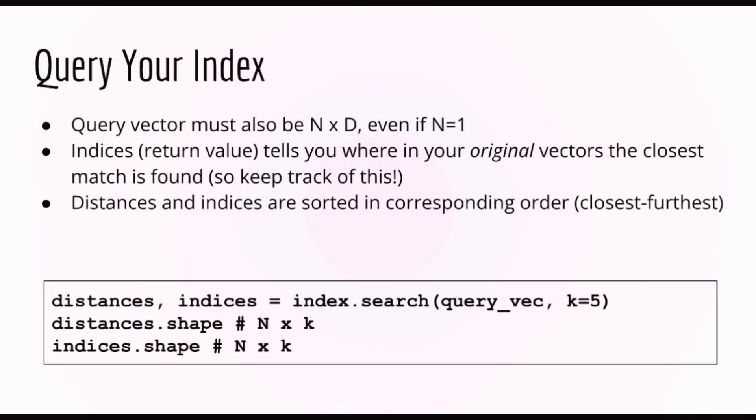The final step is to actually use your vector index to make queries. To do this, call the index.search function, passing in the query vector and the number of neighbors you want back. Note that the search function also requires the input query vector to be two-dimensional. This is even the case when you only have one query vector. So instead of passing in a one-dimensional vector of size D, you must pass in a two-dimensional vector of size 1 by D. This presumably means that you can do multiple queries at the same time, although we won't try this in the coming lecture.